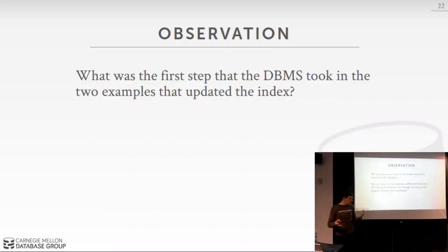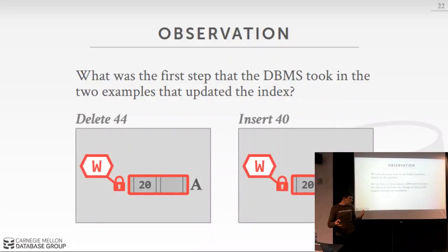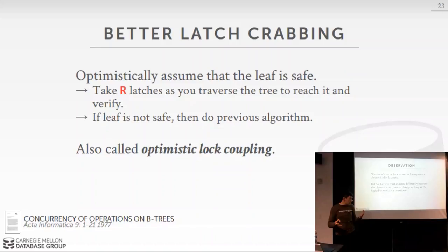A key observation about latch crabbing: for insert or delete, the very first step is always acquiring a write latch on the root, which becomes a huge bottleneck. Even if modifying the right side of the tree, nobody can read the left side because you've taken a write latch on the root.